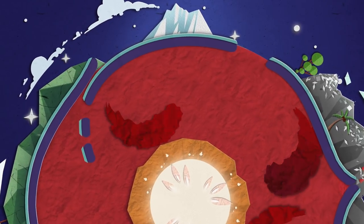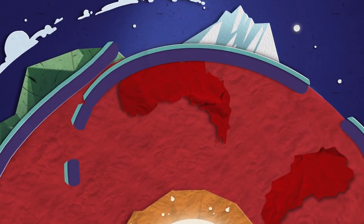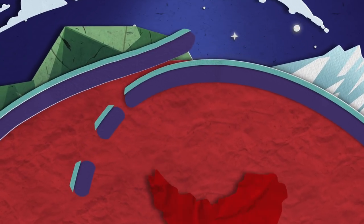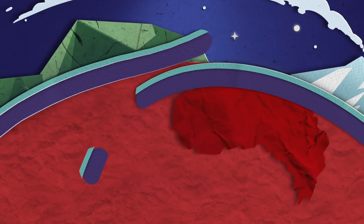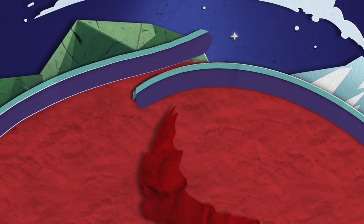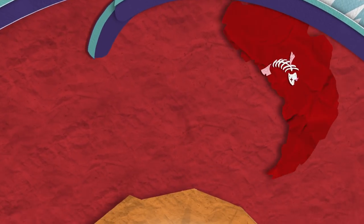One example is a subduction zone, which also means one plate is pushing itself over the top of the other. In this case, the crust which is underneath the other starts sinking towards the core because of its cold temperature.